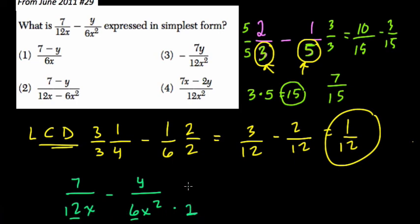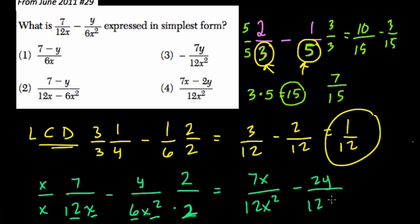Now I'm also going to multiply the numerator by 2 because we don't want to change the fraction. 2 over 2 is still 1. It balances. But then I notice, here I have an x and here I have an x squared. Can I multiply anything by x to get x squared? Sure, I can multiply it by x, because x times x is x squared. Do the same thing in the numerator to keep it balanced. So we have 7 times x or 7x. 12x times x, which is 12x squared. That's our least common denominator. Minus 2y over 12x squared.